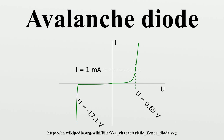Uses: Voltage reference. The voltage after breakdown varies only slightly with changing current. This makes the avalanche diode useful as a type of voltage reference. Voltage reference diodes rated more than about 5.5 volts are generally avalanche diodes.